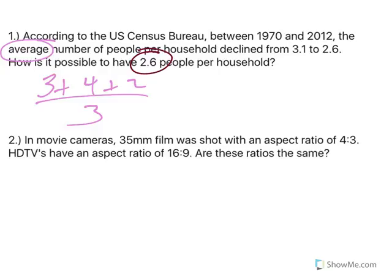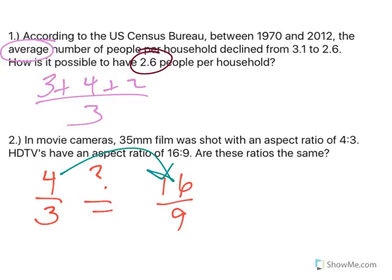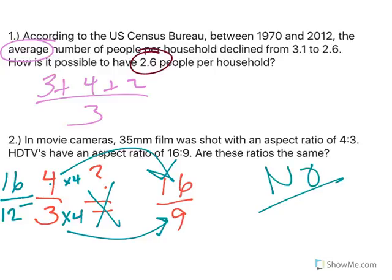Number two. In movie cameras, 35 millimeter film was shot with an aspect ratio of 4 to 3. HDTVs have an aspect ratio of 16 to 9. Are these ratios the same? So the question is, does 4 thirds equal 16 ninths? Well, there's a couple ways you can do this, but I like to just kind of do it this way. To get to 16 from 4, I have to multiply by 4. 4 times 4 is 16. Well, mathematically, you've got to do the same. So if I take 3 times 4, is that 9? No. 3 times 4 is 12. So if I wanted an equal ratio, I would have 16 over 12. So are these ratios the same? No, they're not.